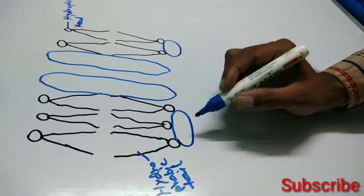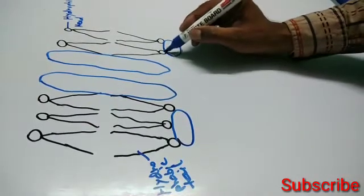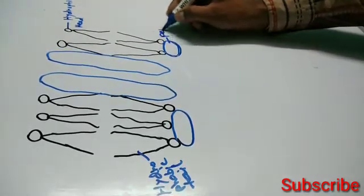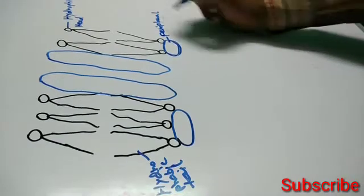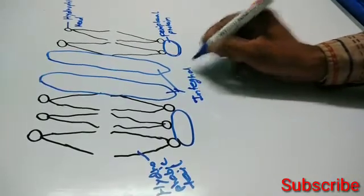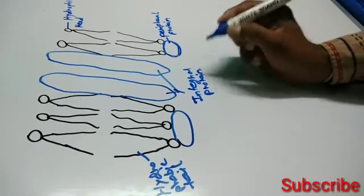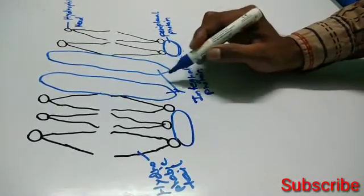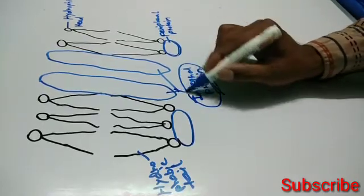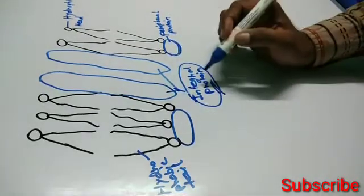Proteins are arranged either at the periphery — this is peripheral protein, as it is situated at the periphery — or as integral protein, because it penetrates throughout the lipid bilayer. It may be arranged partially or completely.